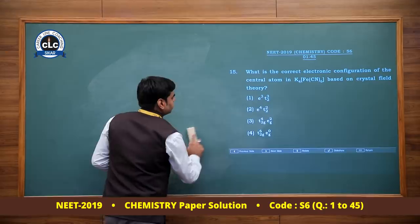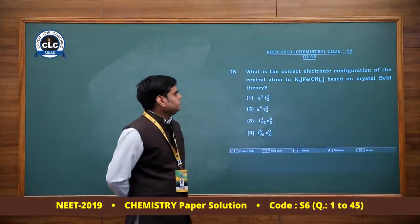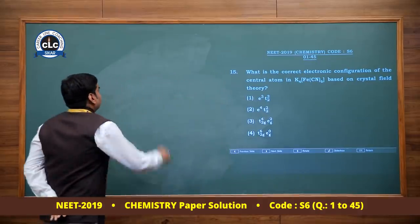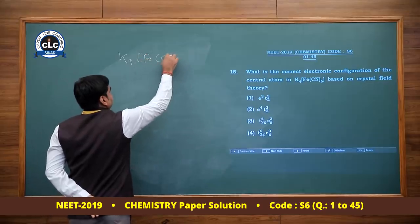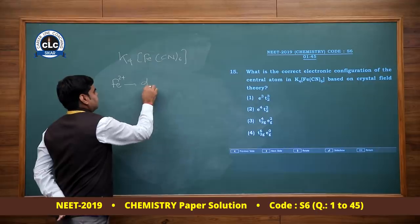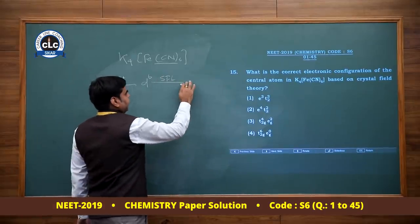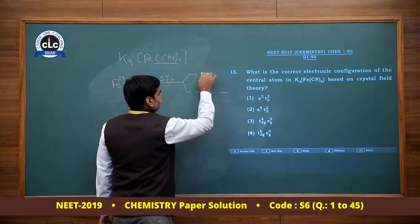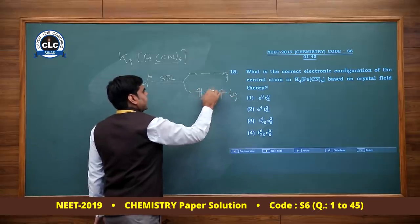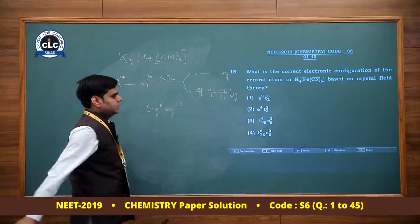Question number 15: What is the correct electronic configuration of the central atom in K4Fe(CN)6 based on Crystal Field Theory? Central metal ion is Fe²⁺ with d6 configuration. Cyanide is a strong field ligand causing pairing. In octahedral field, t2g and eg splitting occurs — strong field ligand forces all 6 electrons into t2g. Configuration: t2g⁶ eg⁰ — option 4.